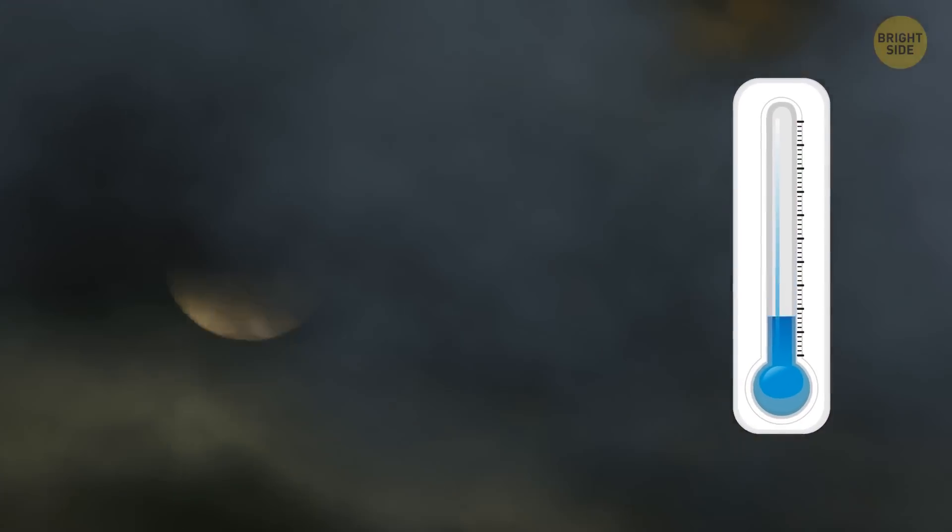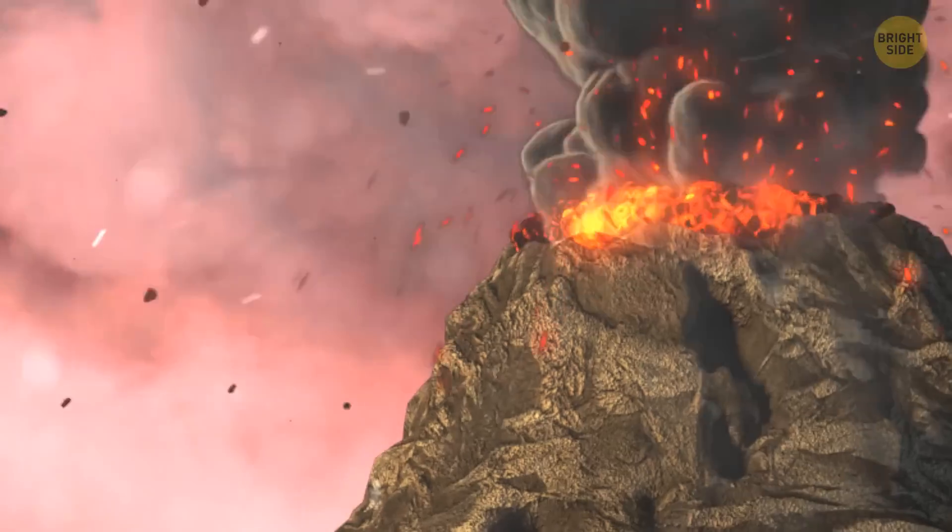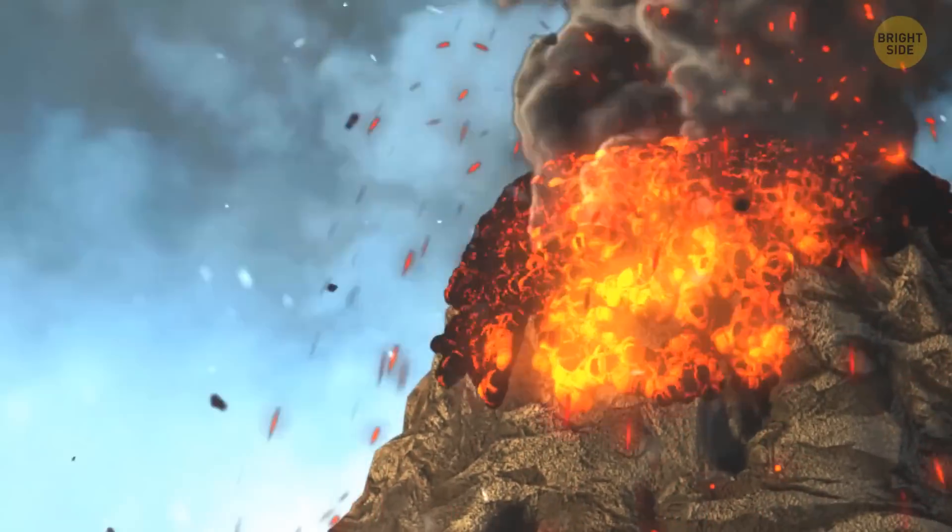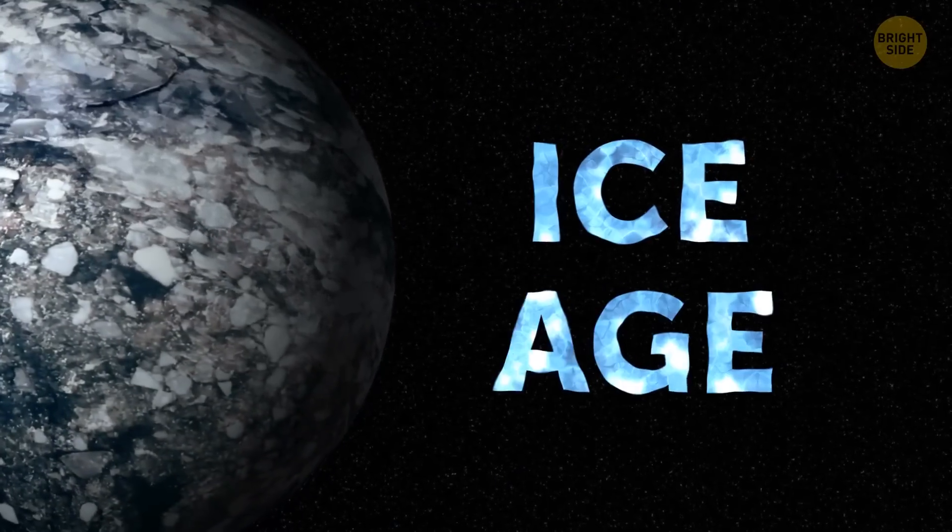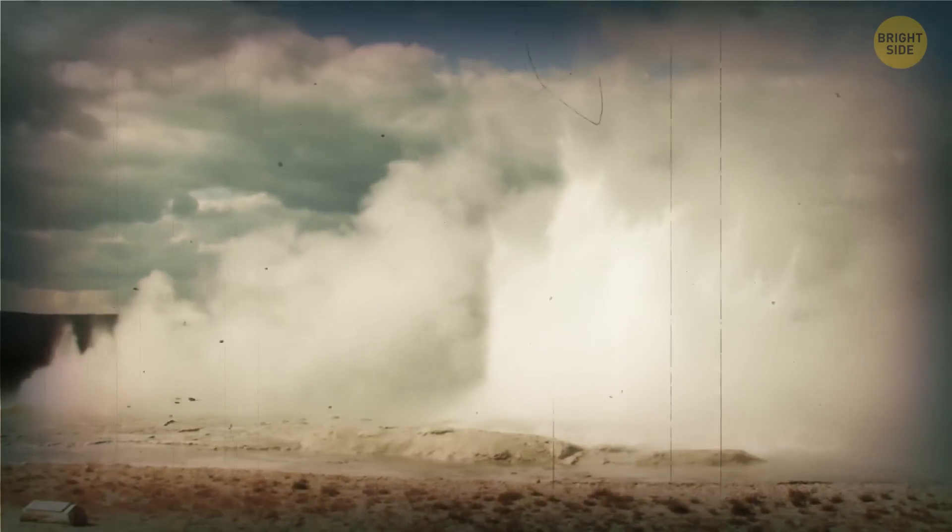Worse still, it would spread in the air and block out the sun, leading to a drastic drop in temperature and an artificial winter. Even regular volcanoes can lower temperatures worldwide by a few degrees. A supervolcano may potentially cause a new ice age.